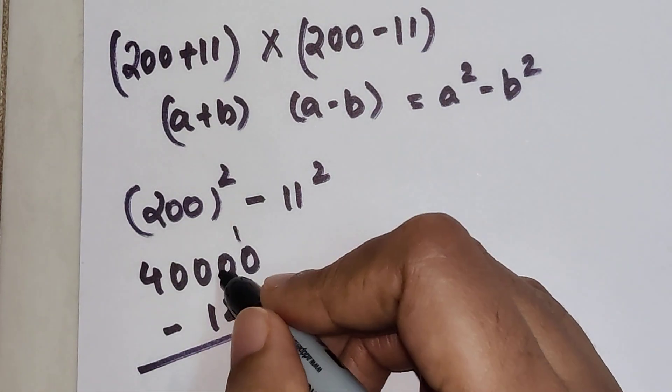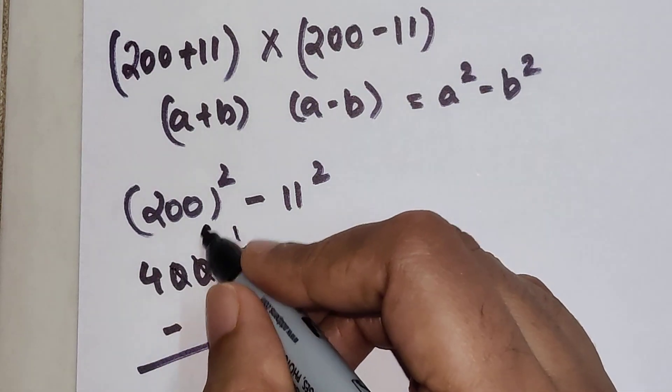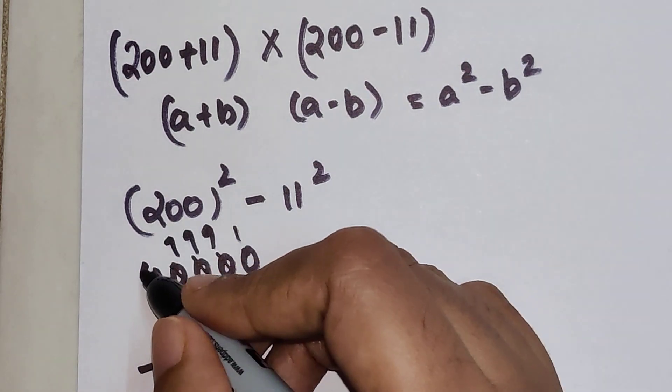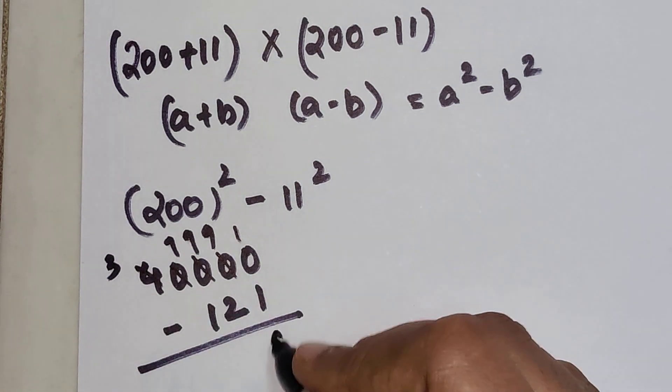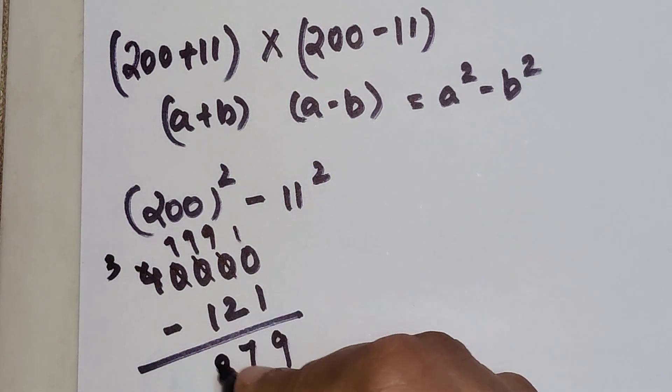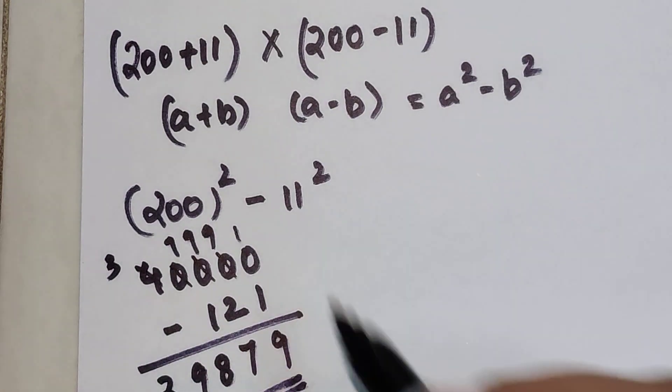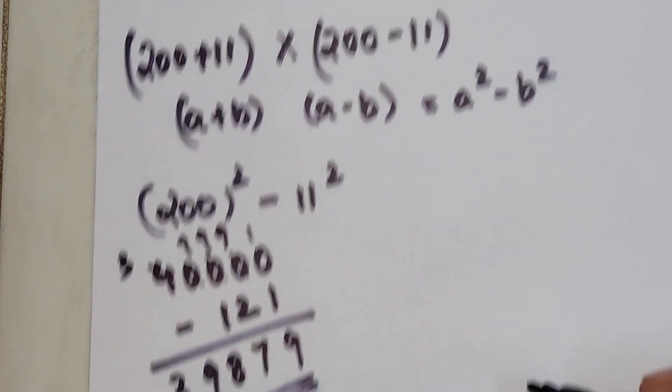So we are doing a carry over here. So all the zeros will get cancelled and become 9. And here 4 will also get cancelled and become 3. So we have 9, 7, 8, 9, 3. That's your answer for this particular question.